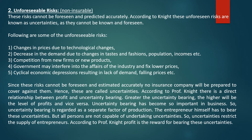According to Professor Knight, there is a direct relation between profit and uncertainty bearing. Greater the uncertainty bearing, higher will be the level of profit, and vice versa. Uncertainty bearing has become so important in business that it is regarded as a secret factor of production. The entrepreneur himself has to bear these uncertainties, but not all persons are capable of undertaking uncertainty. Thus, uncertainty restricts the supply of entrepreneurs. According to Professor Knight, profit is the reward for bearing these uncertainties.